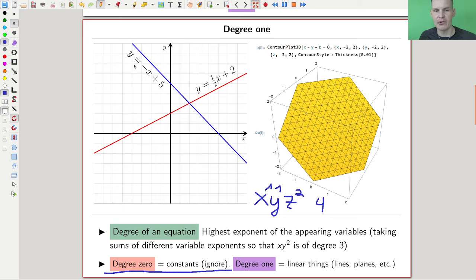If you have a degree one polynomial equation, y = -x + 5, the points satisfying this lie on a line. If you do it one dimension higher, x - y + z = 0, the solutions lie on a plane. So degree one solutions in algebraic geometry are usually boring; we definitely want to go higher because this is like linear algebra, the linear stuff.